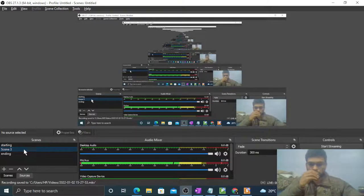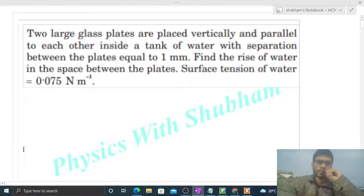Okay, hi everyone. Today let's discuss one interesting problem. It says two large glass plates are placed vertically and parallel to each other inside a tank of water with separation between the plates equal to 1 mm. Find the rise of water in the space between the plates. Surface tension of water is given.